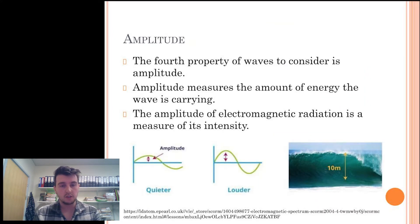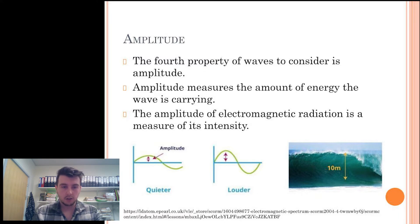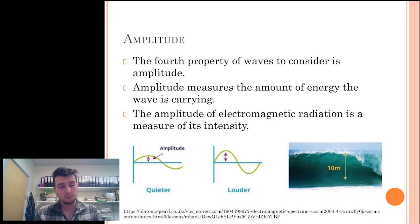The fourth property of waves to consider is amplitude. This is a measurement of the energy the wave is carrying. An example is an ocean wave — the higher the wave, the larger the volume of water, which carries more energy. The amplitude of electromagnetic radiation is a measure of its intensity, or, more familiar in the case of light, its brightness.